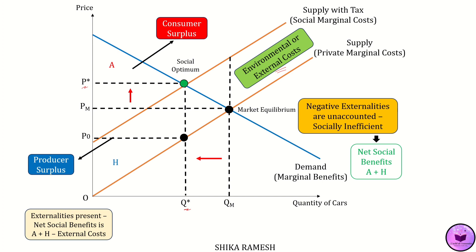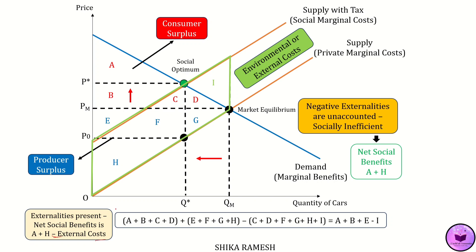Now the consumer surplus at QM is represented by the area A plus B plus C plus D, and producer surplus at QM is E plus F plus G plus H. The total externality costs are given in the parallelogram as C plus D plus F plus G plus H plus I, which is the vertical distance between the original supply curve and the new supply curve with tax. Since externality represents a cost, it needs to be subtracted from the total market benefits. Hence, the net social welfare of the unregulated automobile market will be A plus B plus E minus I.